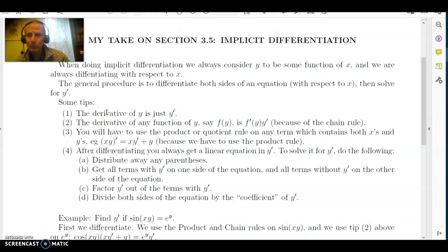So how do we actually do implicit differentiation? We always consider y to be some function of x, and we differentiate with respect to x. Since y is a function of x, in any expression that contains y's, we can therefore use the chain rule. Just like when you had f of g of x, and you would have to say the derivative is f prime of g of x times g prime of x. If you have f of y, when you differentiate with respect to x, the derivative has to be f prime of y times y prime. Again, just the chain rule.